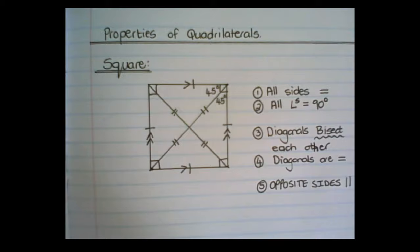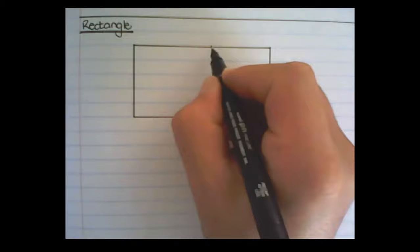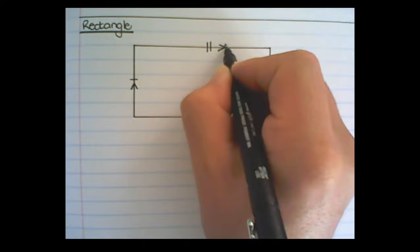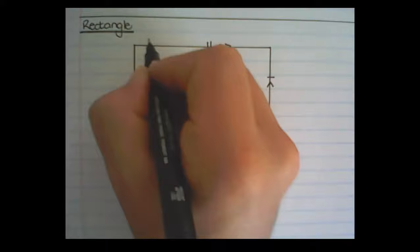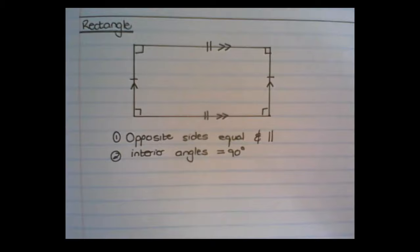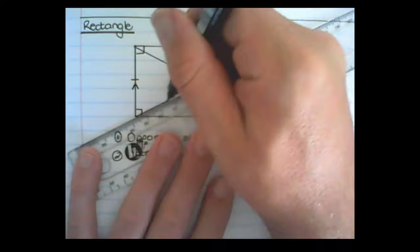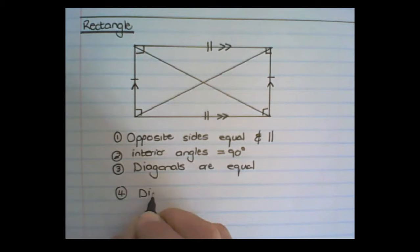Next, we have a rectangle. What we know from rectangles are the opposite sides are of equal length and the opposite sides are parallel. We also know that all interior angles are 90 degrees. The diagonals, meaning the lines running from corner to corner, are equal in length, and the diagonals bisect each other, meaning they cut each other in half.